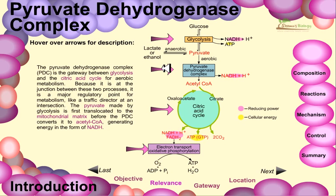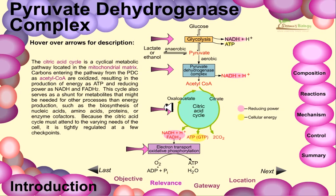The pyruvate dehydrogenase complex is the gateway between glycolysis and the citric acid cycle for aerobic metabolism, positioned at the junction between the two processes. It is a major regulatory point for metabolism, like a traffic director at an intersection. The pyruvate made by glycolysis is first translocated to the mitochondrial matrix before the PDC converts it into acetyl-CoA, generating energy in the form of NADH.